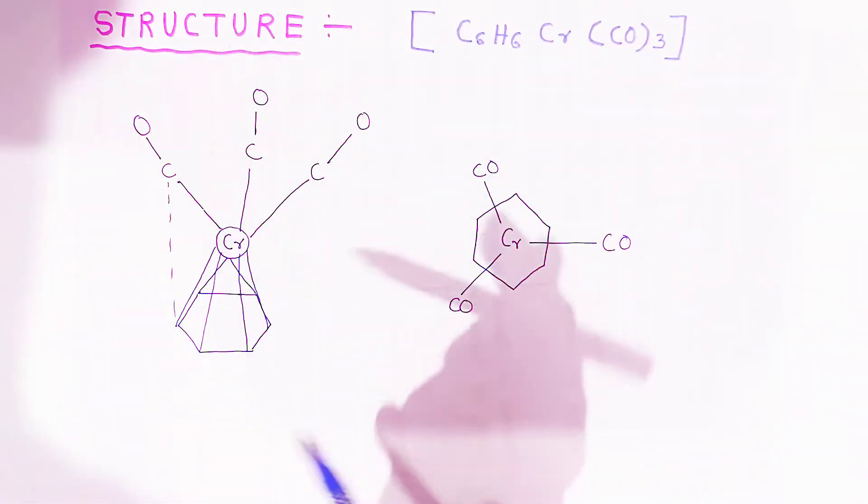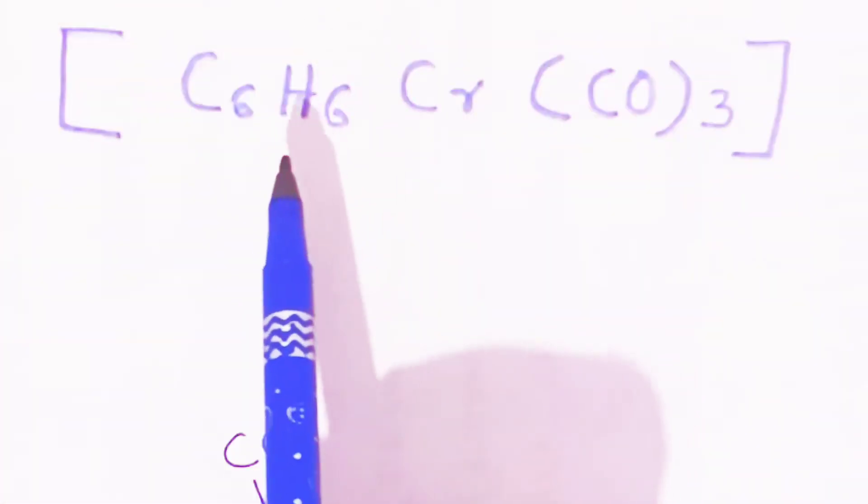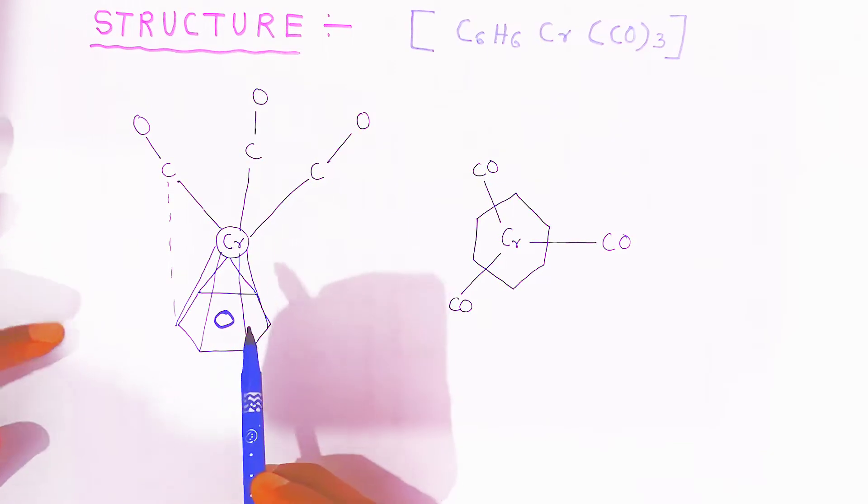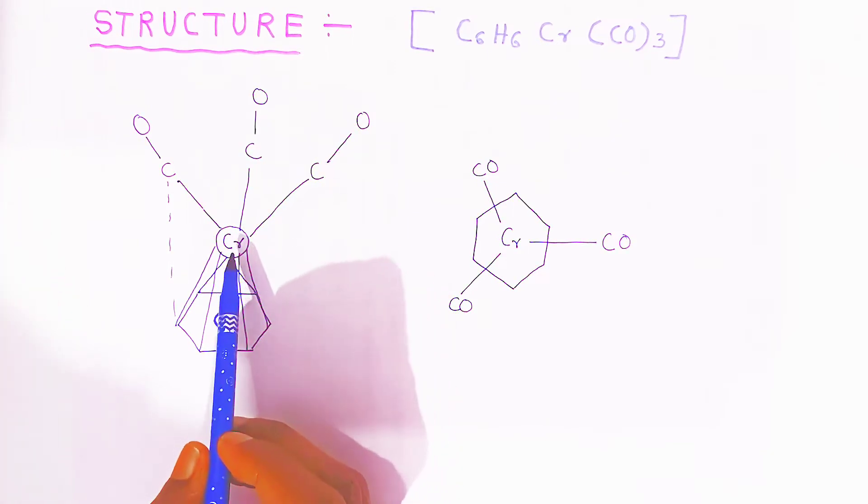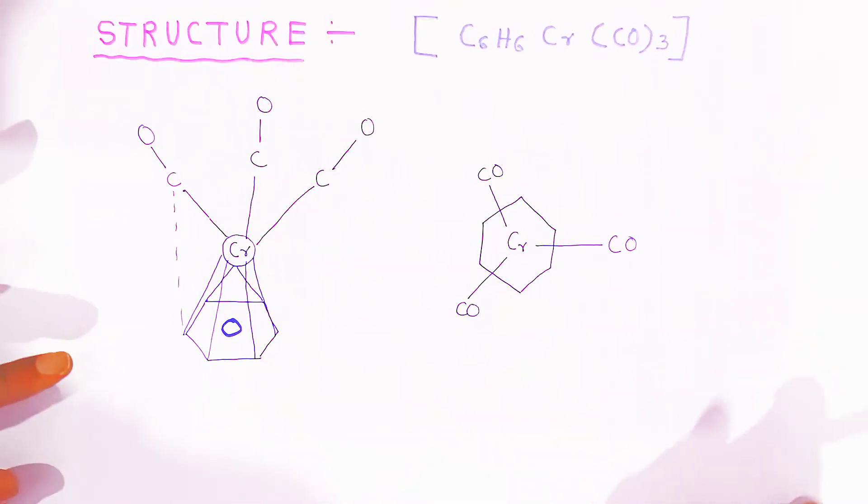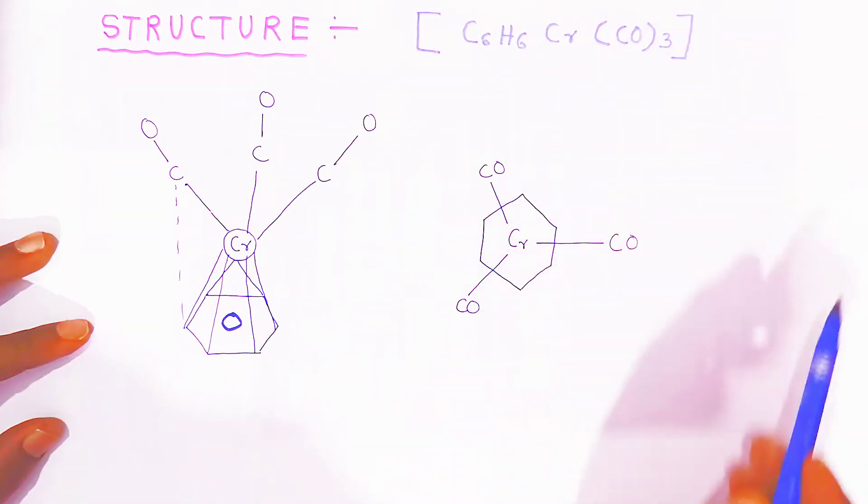Now when you see the structure, this is called benzene-chromium-tricarbonyl complex. The chromium is sandwiched between these three carbonyl groups and the benzene. It is present between these two. So you can write like this.